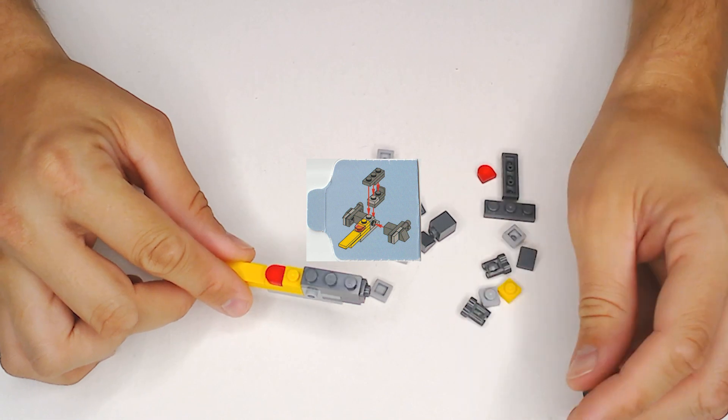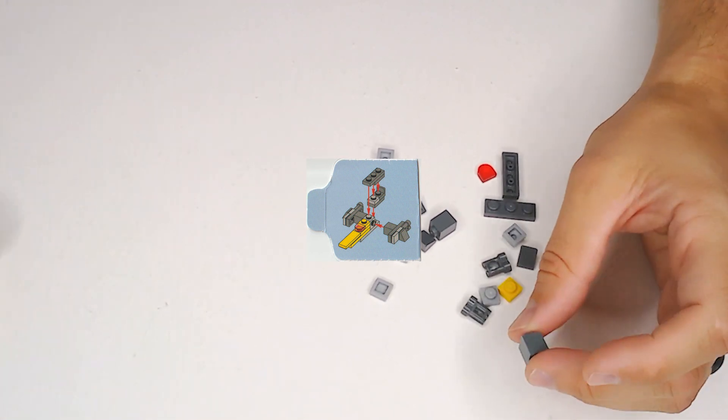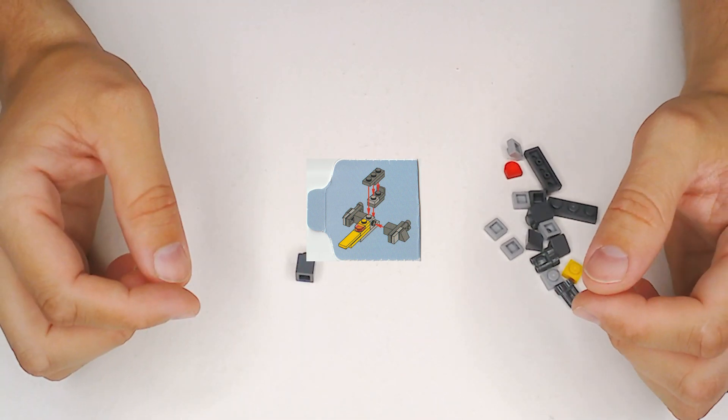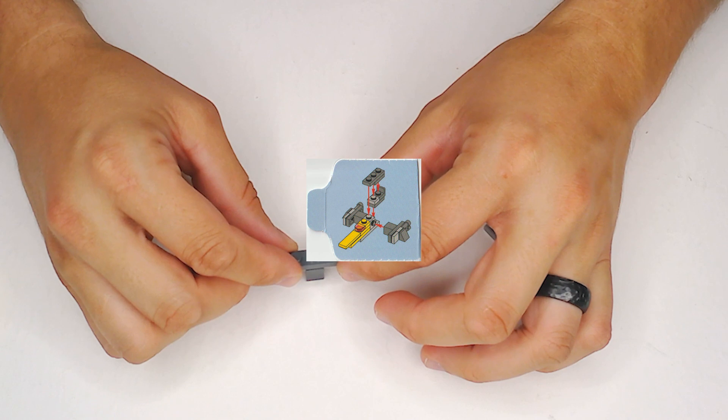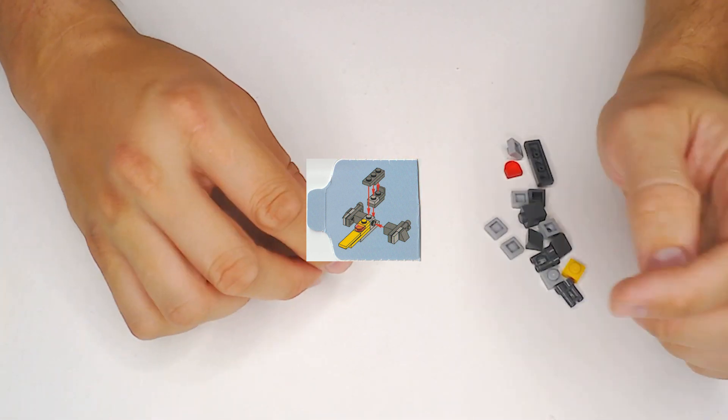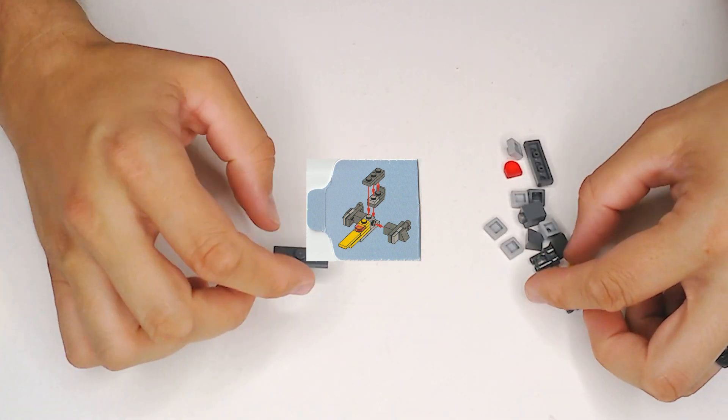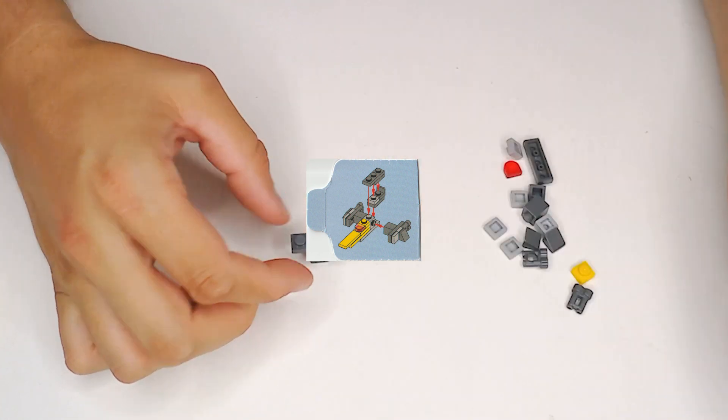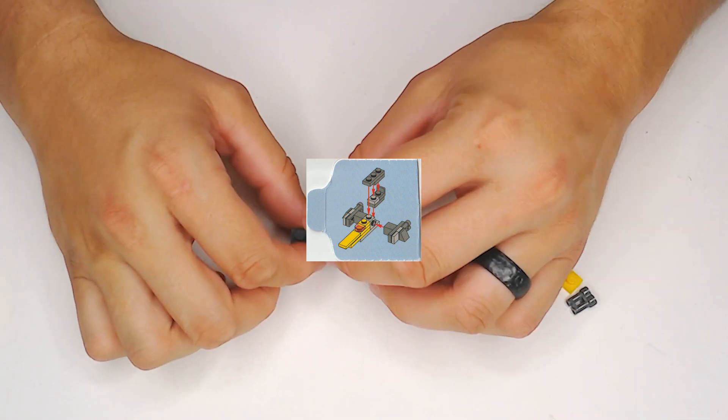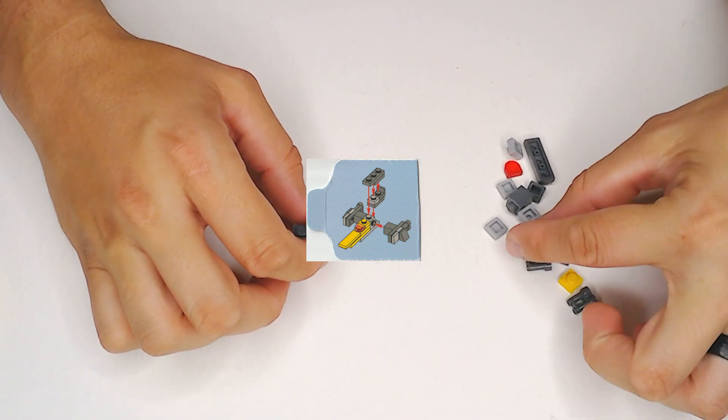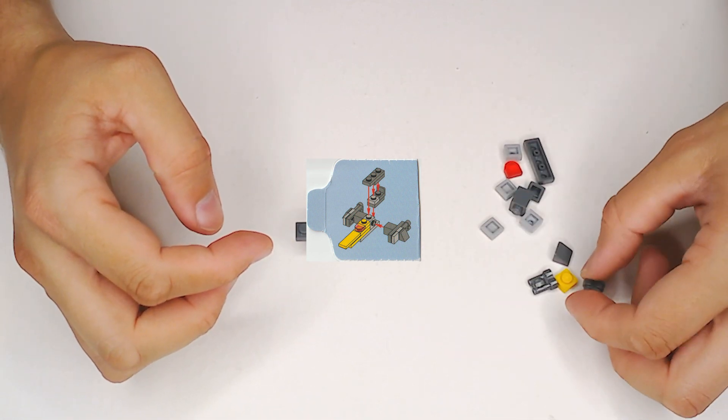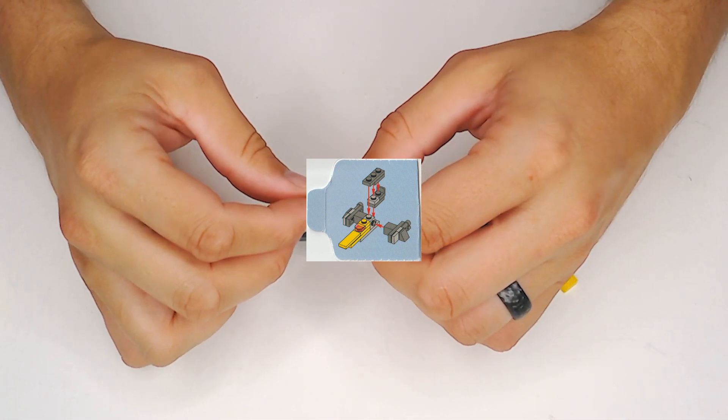And then let's make some wings, so we're going to make one first and then we're going to mirror it. So let's start out with this one by one dark gray block, and then let's put a one by three plate on the bottom so it's a T-shape. Then right in the middle of the T-shape we're going to put a one by one square tile on the opposite side.